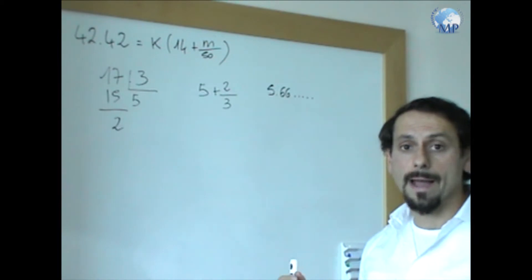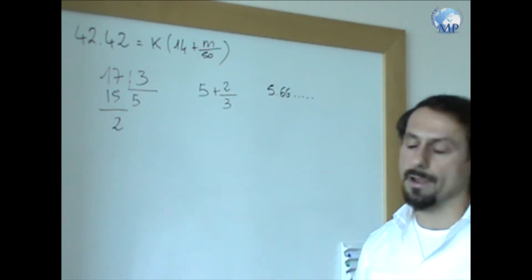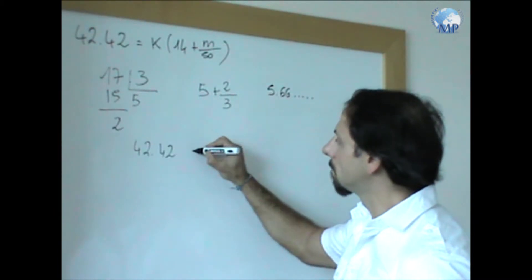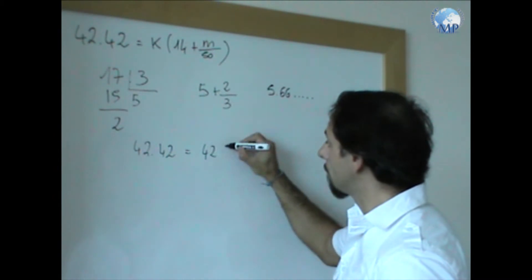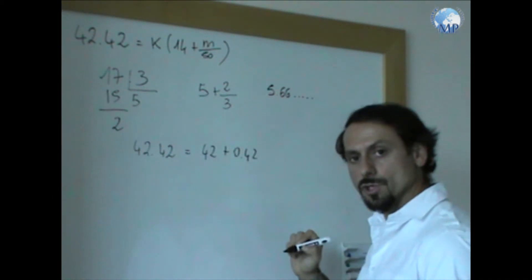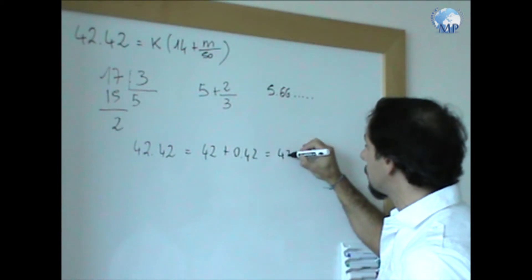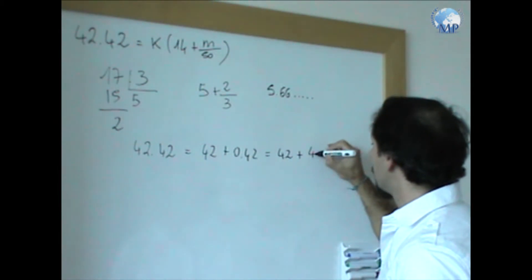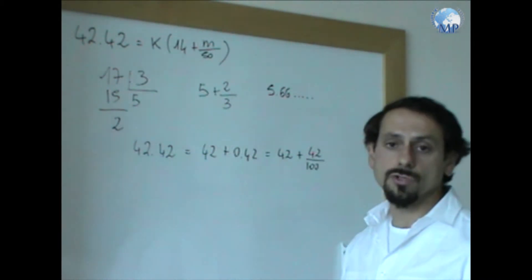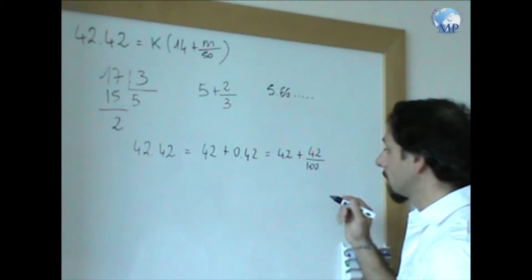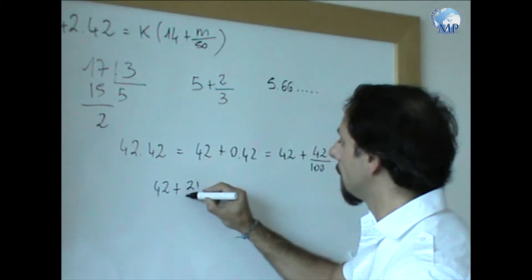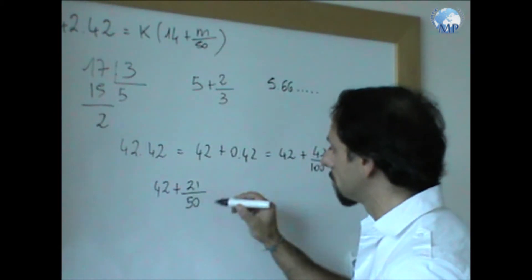If we go back to our original expression, 42.42 would be the same as writing 42 plus 0.42, which in turn would be the same as writing 42 plus 0.42 over 100. I can reduce or simplify this fraction, which gives me 42 plus 21 over 50.